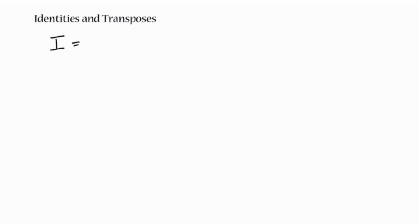Two other important kinds of matrices are identity matrices and transpose matrices. The identity matrix is denoted by I, and it's just a matrix that has ones on the diagonals and zeros everywhere else. That's the identity matrix of dimension three by three. Every dimension has its own square identity matrix of that size.